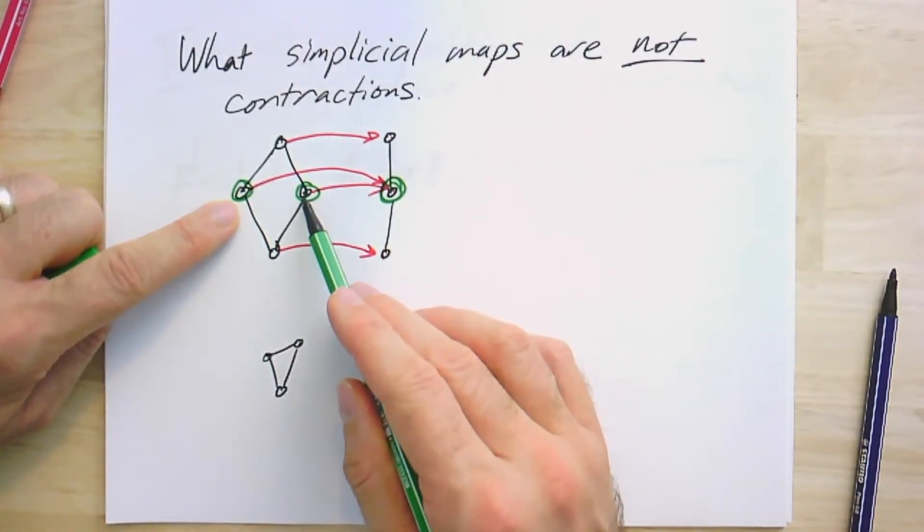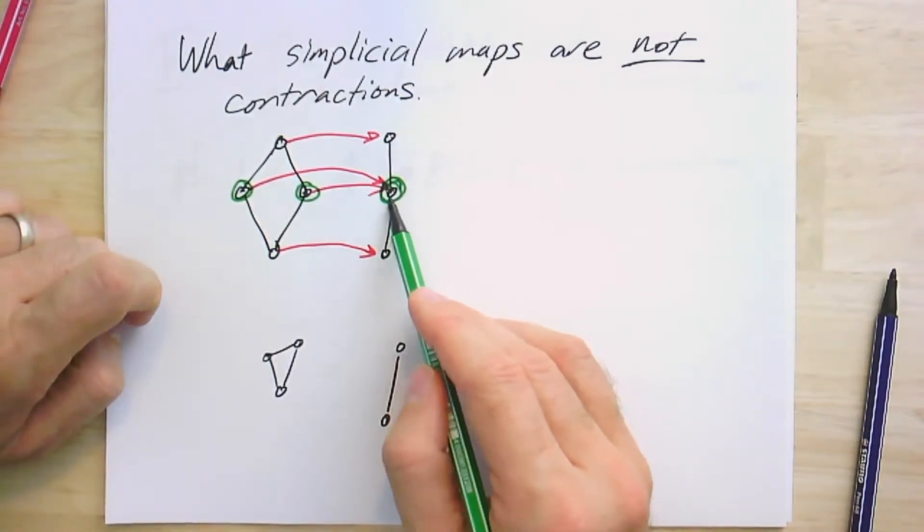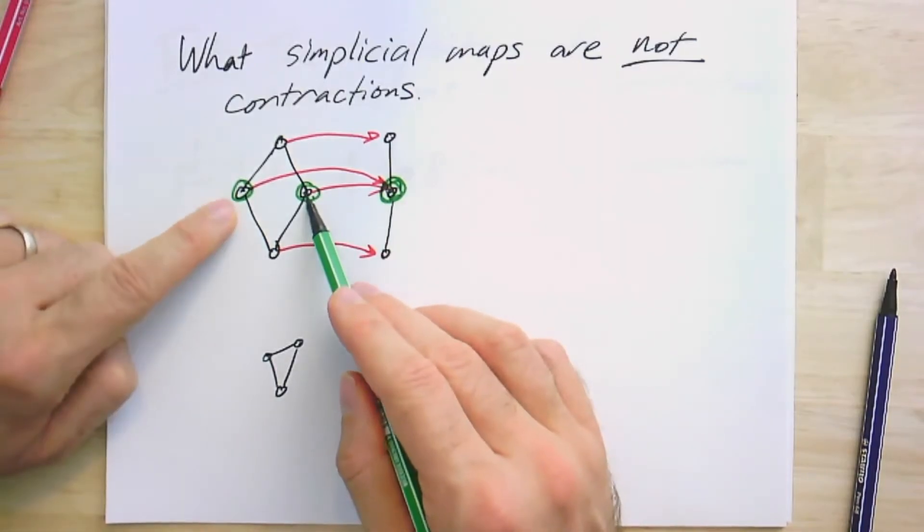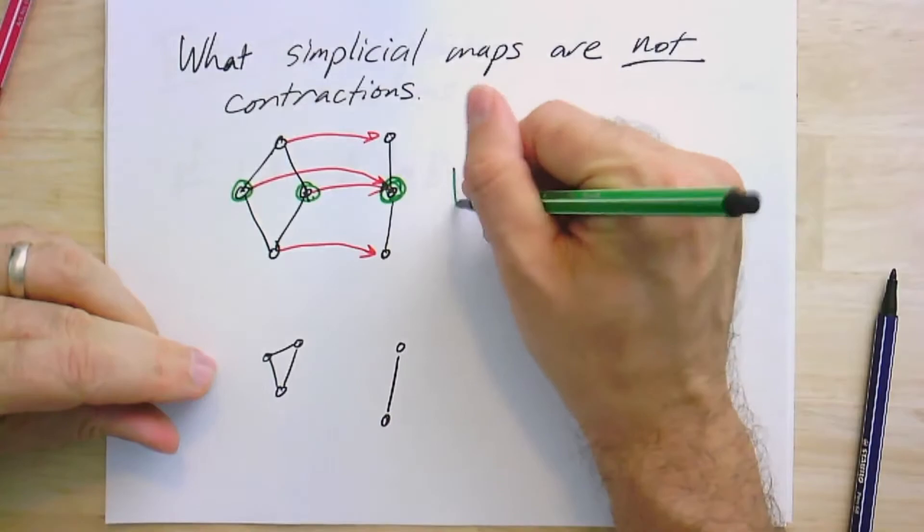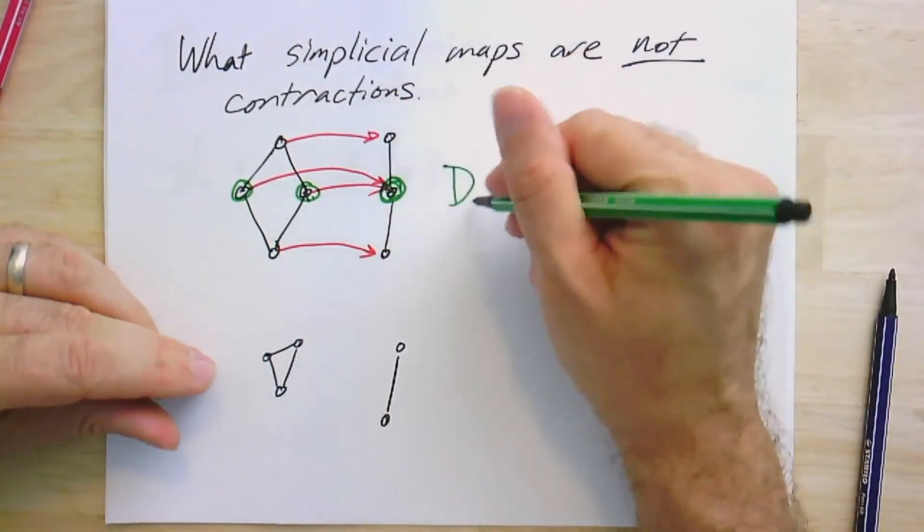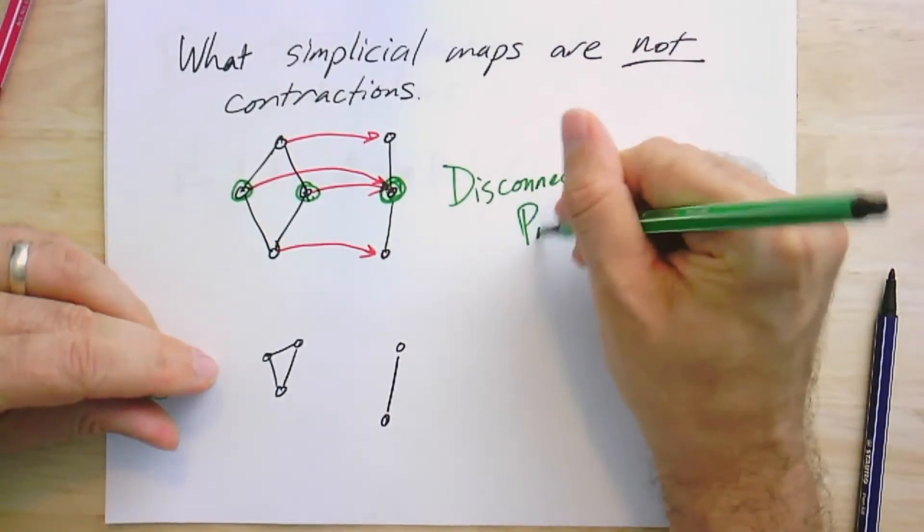It's not a connected subgraph. So if I have a preimage that's not connected, preimage of a connected subgraph is not connected, then it's not a contraction. So this is a case of a disconnected preimage.